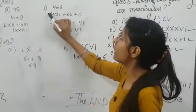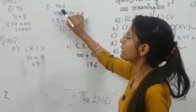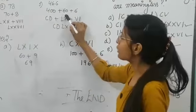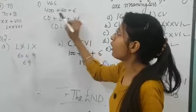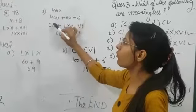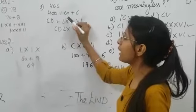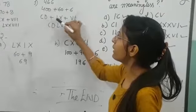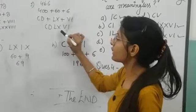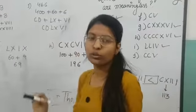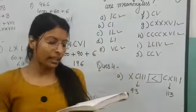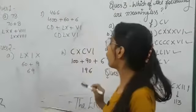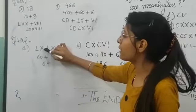Now come to the next part. Now come to question number 2. Write the Hindu Arabic numerals corresponding to each of the following. You want to change the Roman numerals.